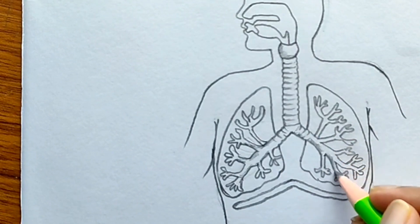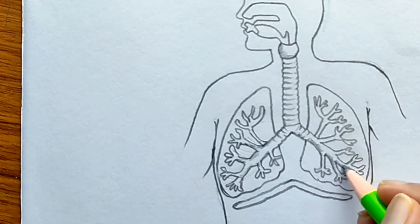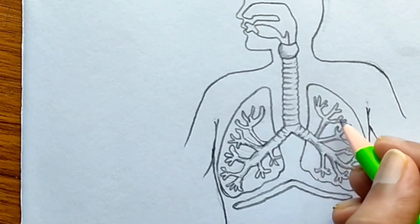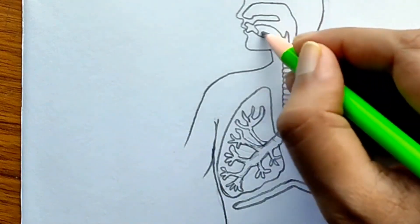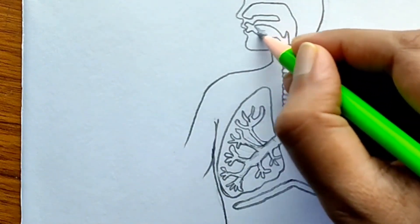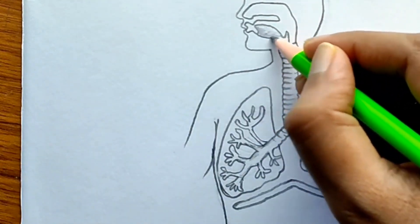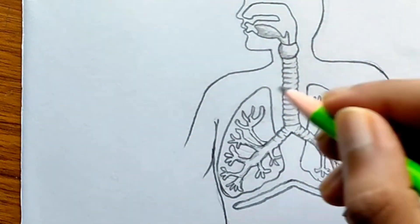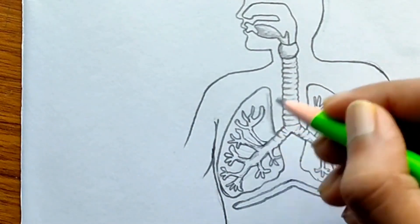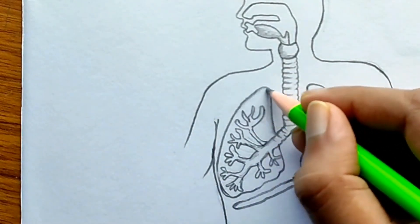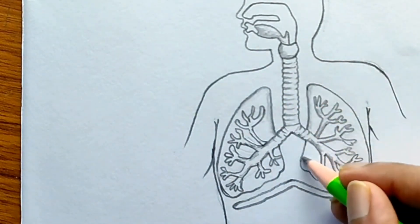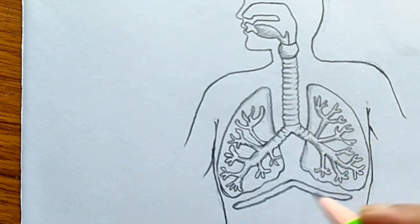The air taken in passes from the external nostrils to the internal nostrils, enters the trachea, then the bronchi, then the bronchioles, and enters into the lungs. CO2 which is given out is pushed from the lungs through the trachea to the external nostrils and outside.